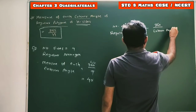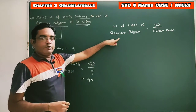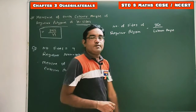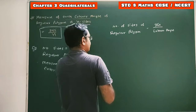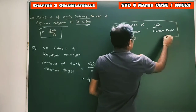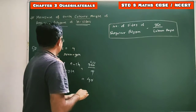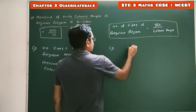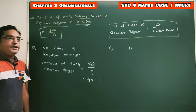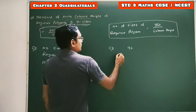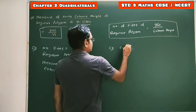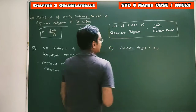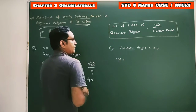Since the given polygon is a regular polygon, all exterior angles are equal, so we divide 360 by the measure of one exterior angle. Using this formula we can find the number of sides of a regular polygon. For example, if the measure of each exterior angle is 90 degrees, the number of sides equals 360 divided by 90, which gives 4.